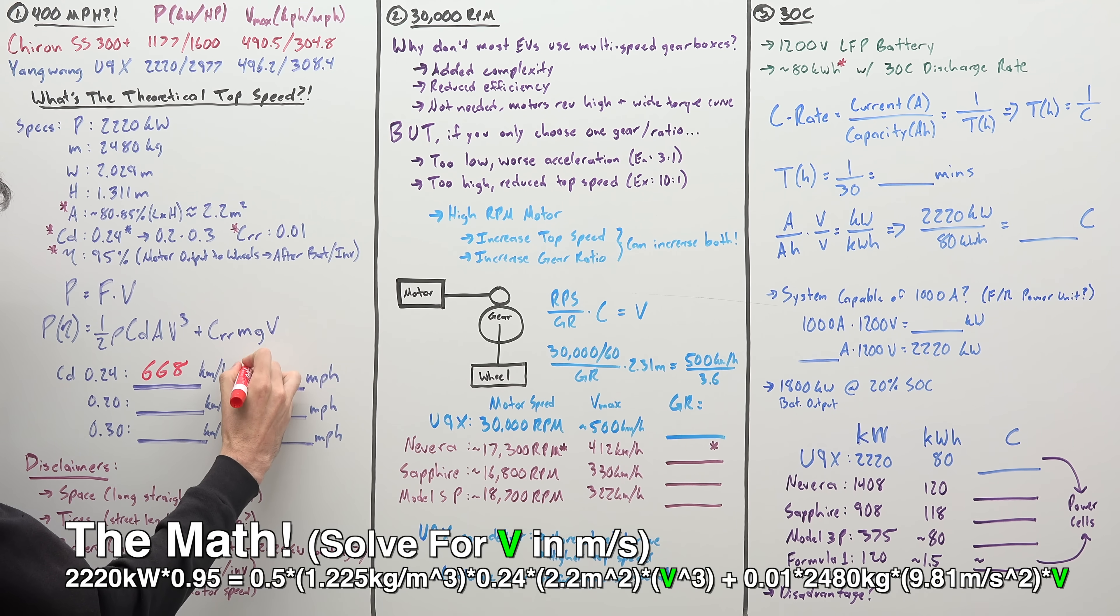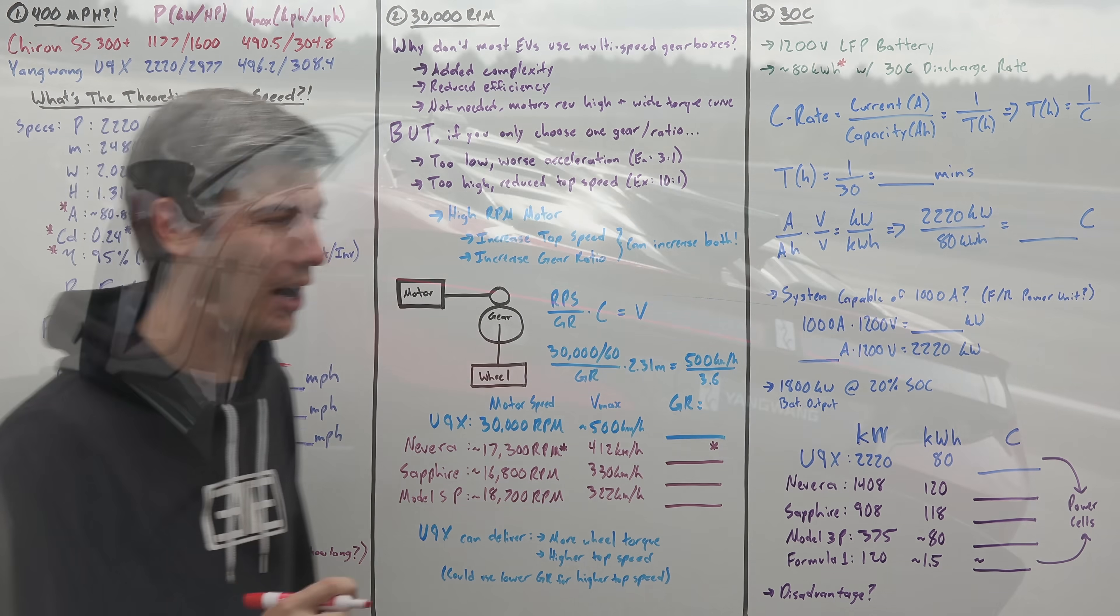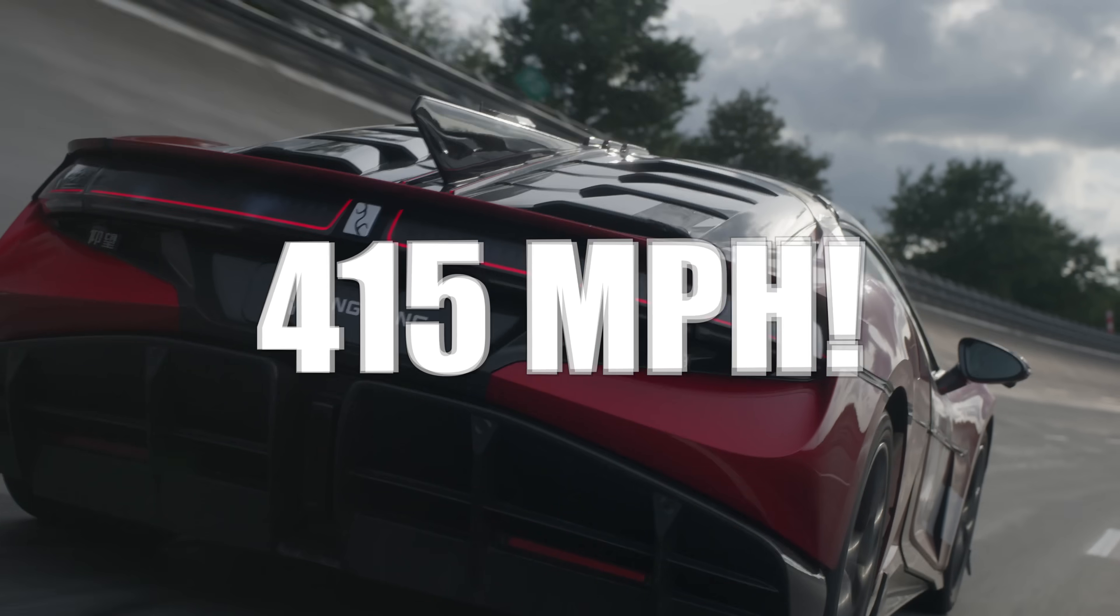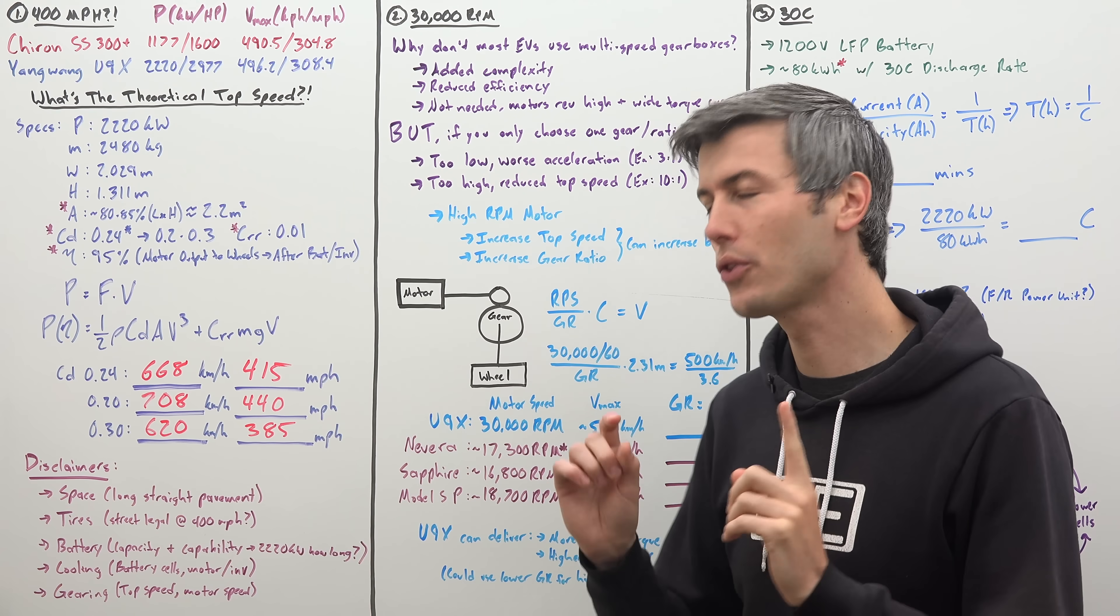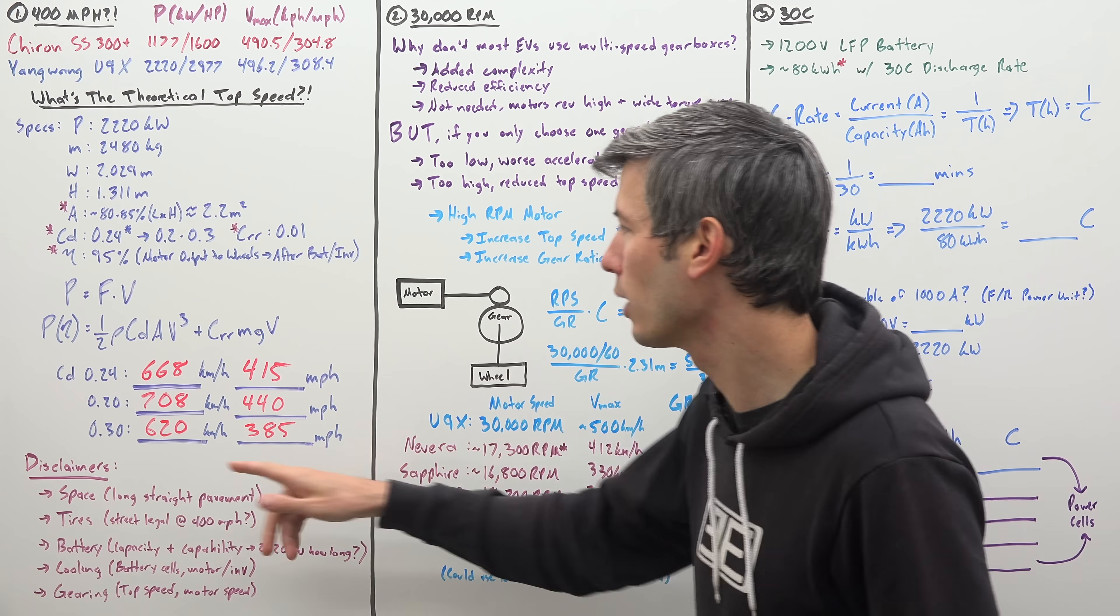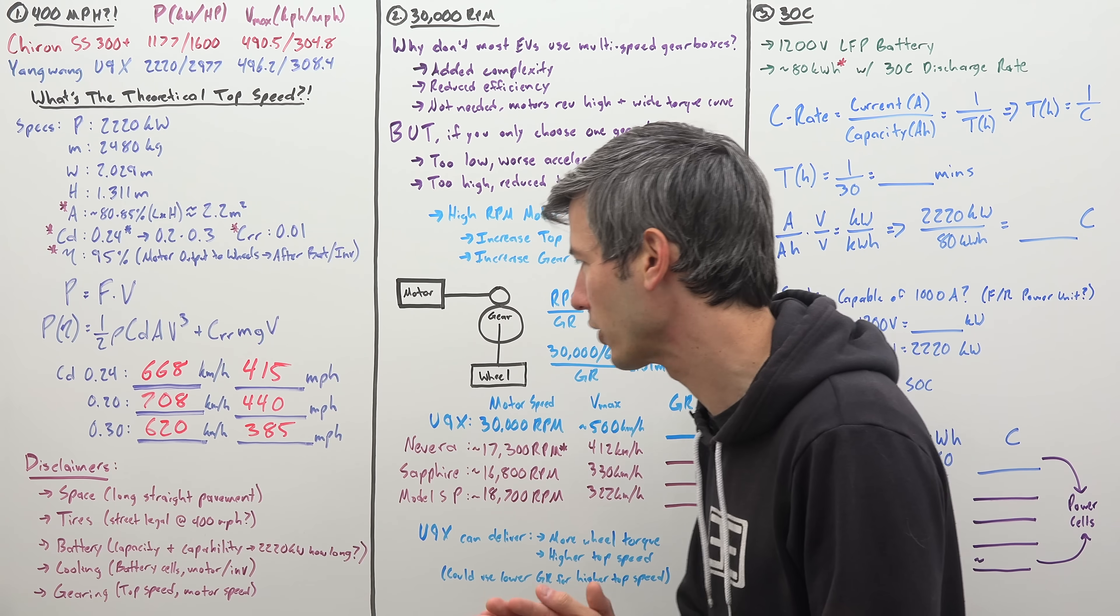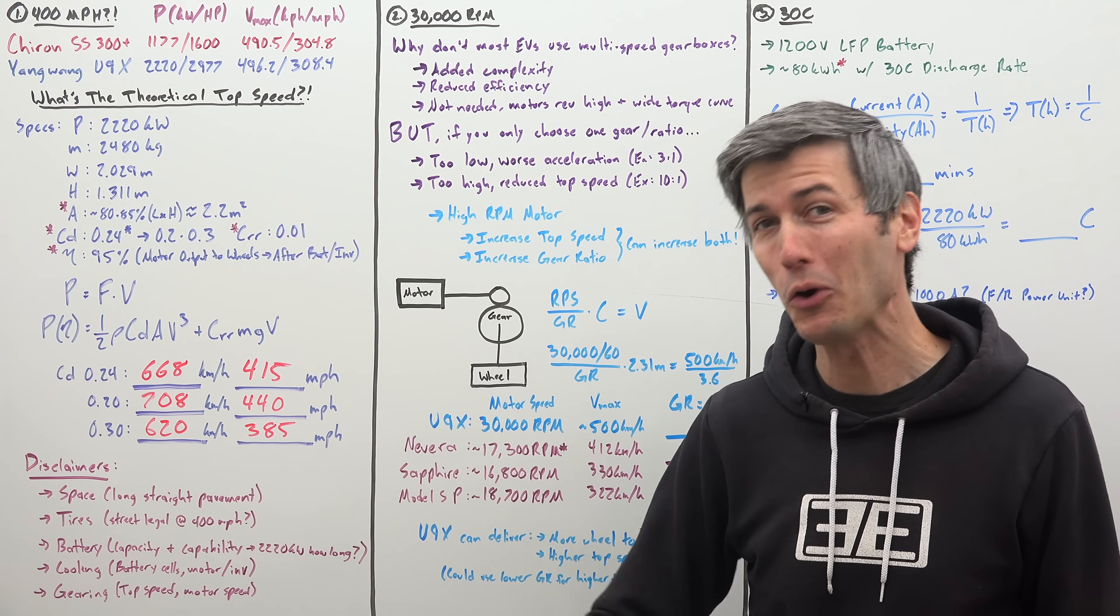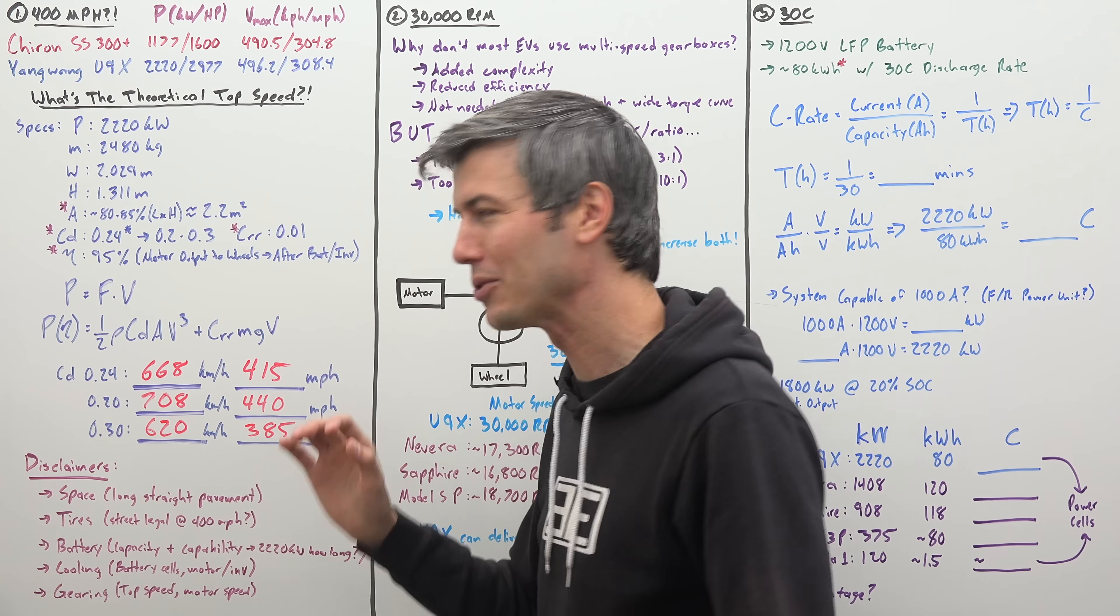668 kilometers per hour, or about 415 miles per hour. 415 miles per hour! What are we even talking about? But as mentioned, we don't know the drag coefficient with certainty. So calculating a bit of a range here between 0.2 and 0.3 for the drag coefficient, which I think is fair for an electric vehicle, it's going to be somewhere between 385 and 440 miles per hour for the estimated theoretical top speed.